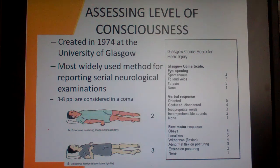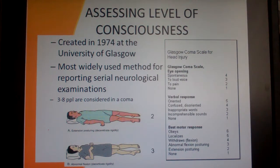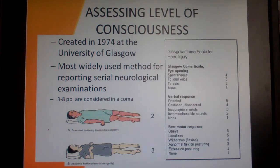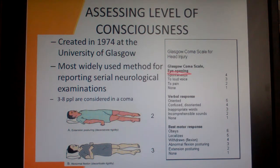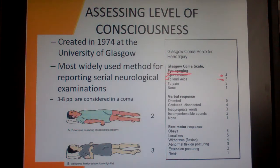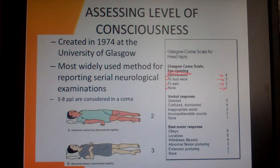Another scale is the Glasgow Coma Scale, used for head injuries, and it's very similar to the AVPU. It dates back to 1974 from the University of Glasgow and is very commonly used. The first category is eye opening: if they open their eyes spontaneously, that's four points. If you have to verbally prompt them, three points. If you have to cause pain to get their eyes open, that's less points. If you simply can't get their eyes open, they only get one point in the eye opening category.